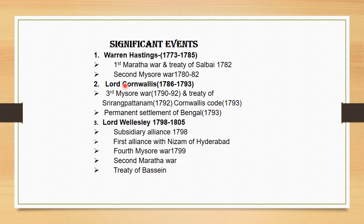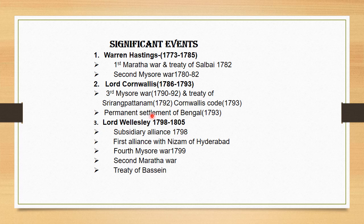In Lord Cornwallis's time, there was another important thing: the Cornwallis Code, signed in 1793. Also during Lord Cornwallis's time was the Permanent Settlement of Bengal — a type of revenue settlement, permanent in nature. You should remember that in 1793, this revenue system — the Permanent Settlement — was introduced.